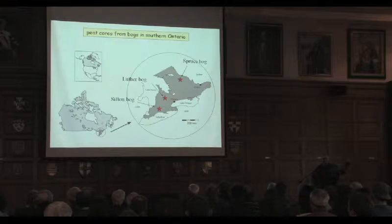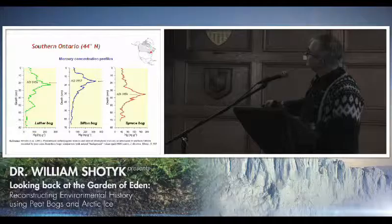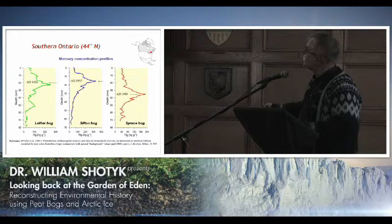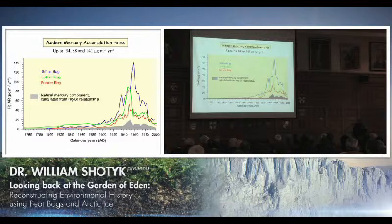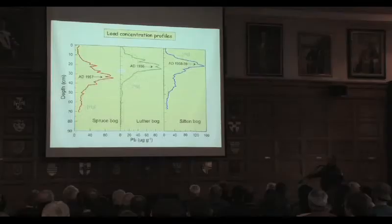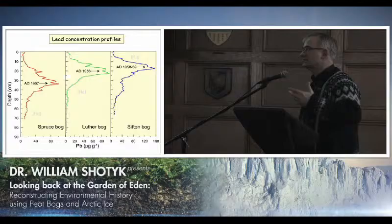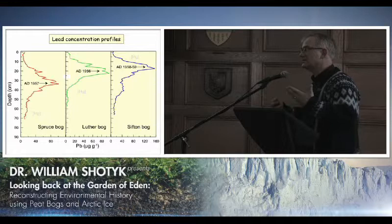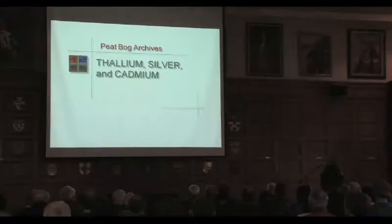The mercury concentration profile in Sifton Bog here in London, Ontario also has a maximum in the 1950s, as do several other peat bogs in Ontario. The maximum rate of atmospheric mercury deposition in Sifton in the 1950s was probably about 100 times above the natural level. Those three peat bogs not only share the same chronology of atmospheric mercury but also atmospheric lead, which again tells us coal was the main source. Here's the maximum lead in Sifton in the late 1950s.